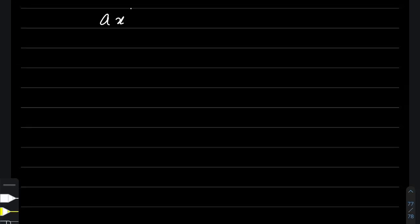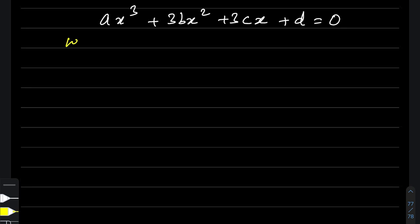Now, time for some scary part. Talking about a cubic equation, let me assume it to be ax³ + 3bx² + 3cx + d = 0. Here also, I'm assuming that the coefficients a, b, c, d are all real numbers.